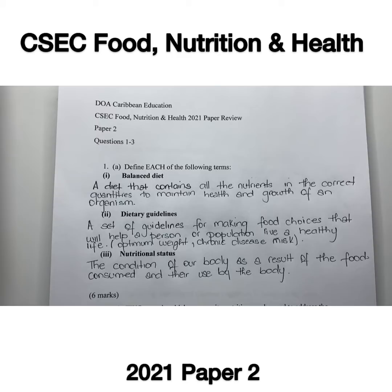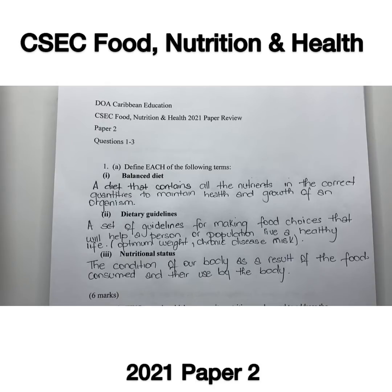The paper initiated by asking students to define the following terms: balanced diet, dietary guidelines, and nutritional status. A balanced diet is a diet that contains all the nutrients in the correct quantities that will maintain the health and growth of an organism.